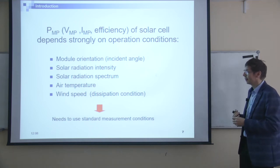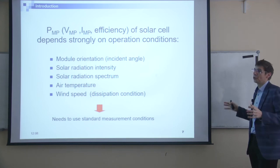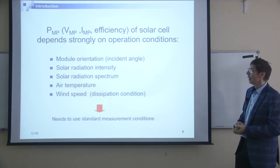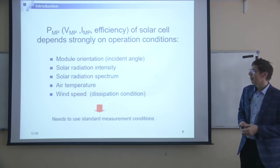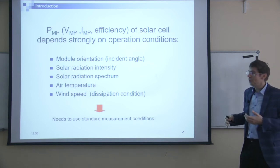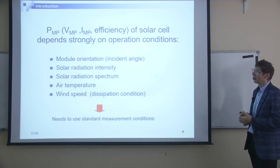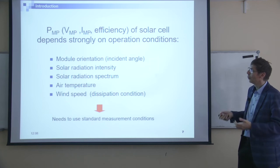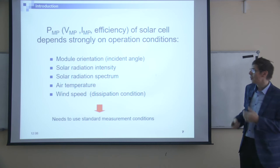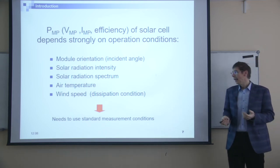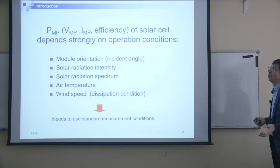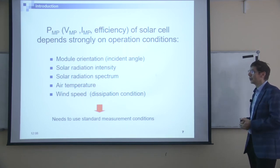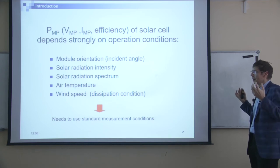This is especially important for multi-junction solar cells — getting the correct spectrum is the main problem for multi-junction solar cells. Also, efficiency depends on temperature, and therefore the output power of the module will depend on the temperature of the air and wind speed — the cooling conditions. So there are a lot of factors which can influence efficiency, and we need some standard measurement conditions to make fair comparisons between different cells obtained by different groups and labs.